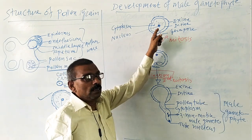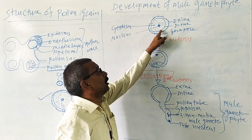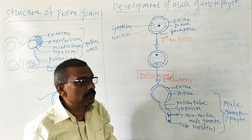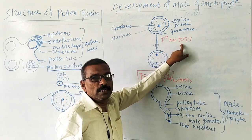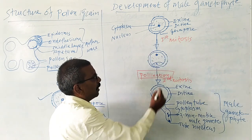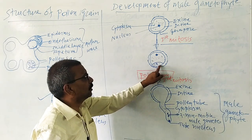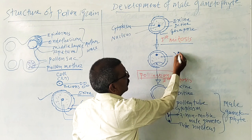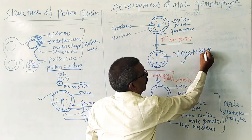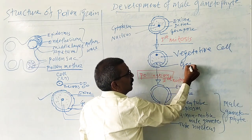During development of the male gametophyte, the pollen grain, while present in the pollen sac inside the anther, divides by mitosis cell division and gives rise to two unequal cells. The larger cell is known as the vegetative cell and the smaller cell is known as the generative cell.